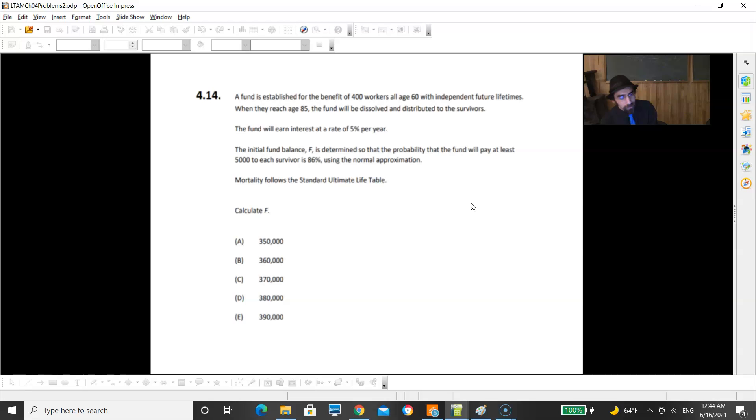Next one. A fund is established for the benefit of 400 workers all age 60 with independent future lifetimes. When they reach age 85, the fund will be dissolved and distributed to their survivors. The fund will earn interest at a rate of 5% per year. The initial fund balance is determined so that the probability that the fund will pay at least 5,000 to each survivor is 86% using the normal approximation. Mortality follows the standard ultimate life table. Calculate F.